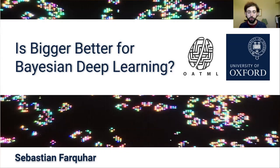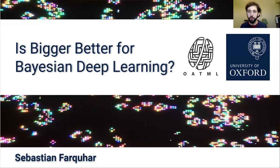I'm Sebastian Farquhar and I'm going to talk today about Bayesian deep learning and some issues that I think are quite interesting for trade-offs that we make when we're doing approximate inference in something like a neural network.